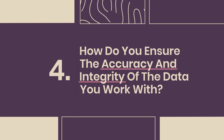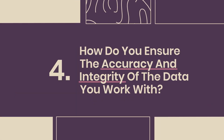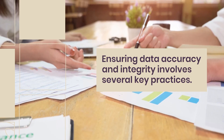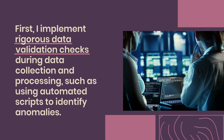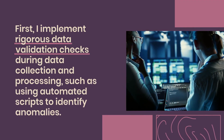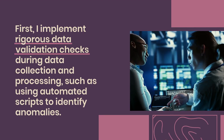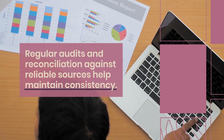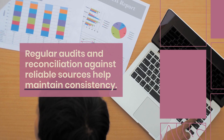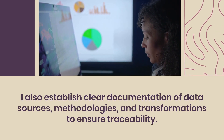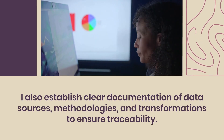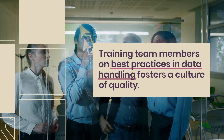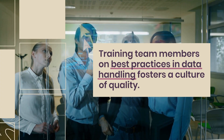Question 4: How do you ensure the accuracy and integrity of the data you work with? Ensuring data accuracy and integrity involves several key practices. First, I implement rigorous data validation checks during data collection and processing, such as using automated scripts to identify anomalies. Regular audits and reconciliation against reliable sources help maintain consistency. I also establish clear documentation of data sources, methodologies, and transformations to ensure traceability. Training team members on best practices in data handling fosters a culture of quality.